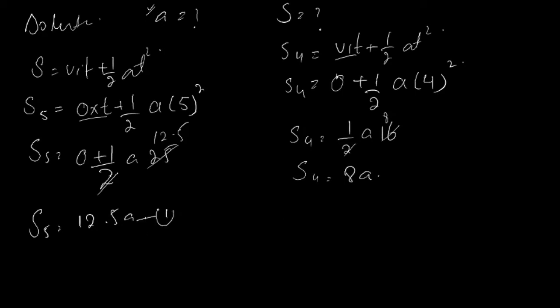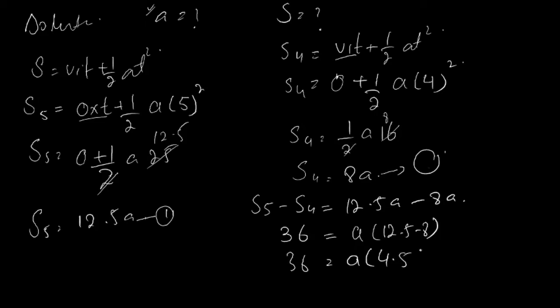One S5 and one S4. So, we will subtract these equations and find acceleration. S5 minus S4 is equal to 12.5A minus 8A. The total distance has covered in 5th second. Who will be equal to S5 minus S4? That is equal to 36. We will add 36. We will add A to common. We will add 12.5A. When we minus 8, we will get 4.5A.